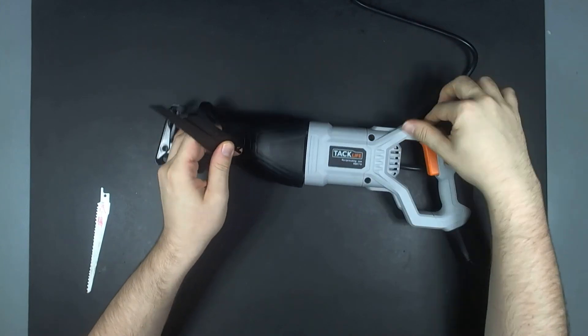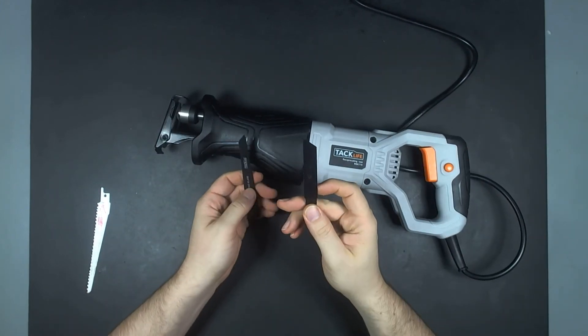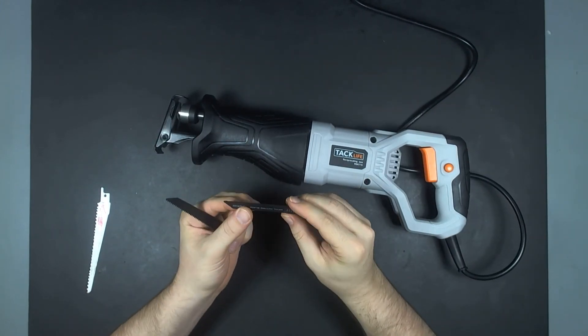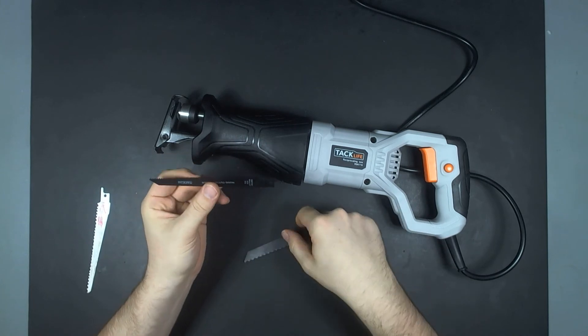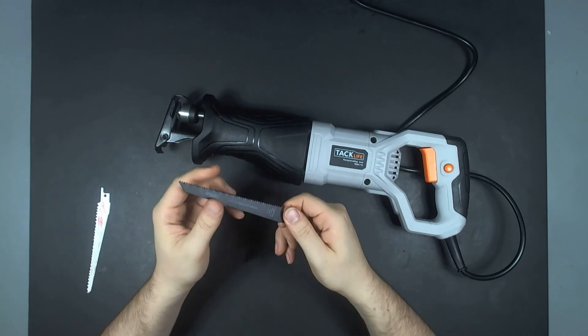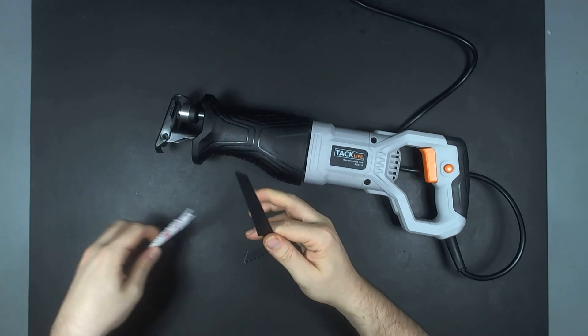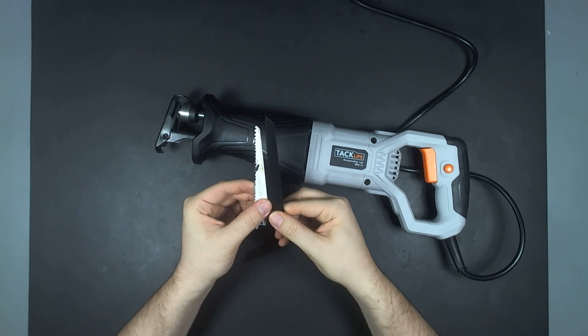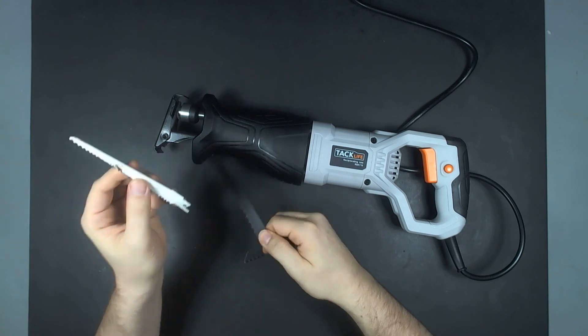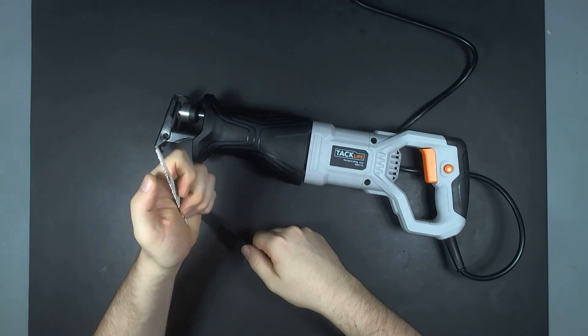There is a really high teeth count saw. This is good for metal. Plastics works okay. And then you get a medium one for wood. This one will make decent cuts compared to a really low tooth count saw, which I prefer because these things just go through wood like nothing.